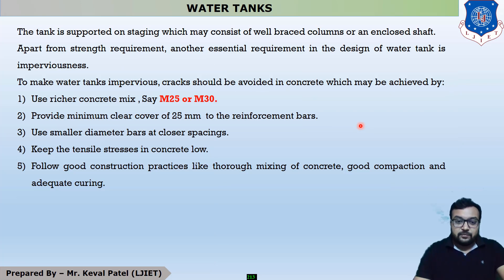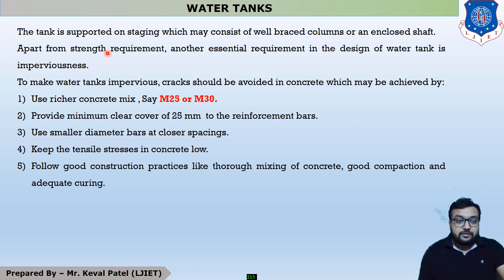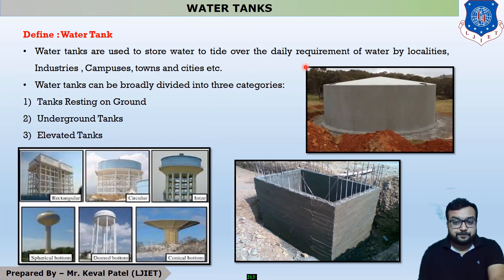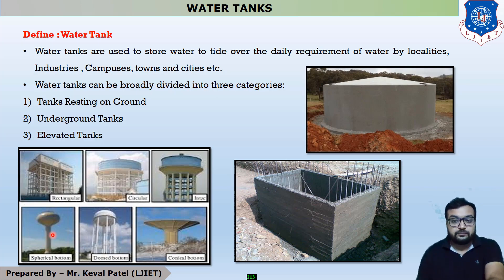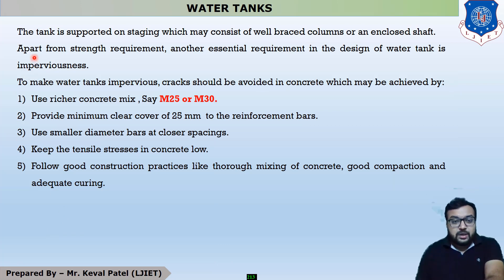Now, what are the main functions and criteria to be fulfilled while designing any water tank? The tank is supported on staging — meaning columns — which may consist of well-braced columns or an enclosed shaft. Apart from strength requirements, another essential requirement in the design of a water tank is imperviousness.